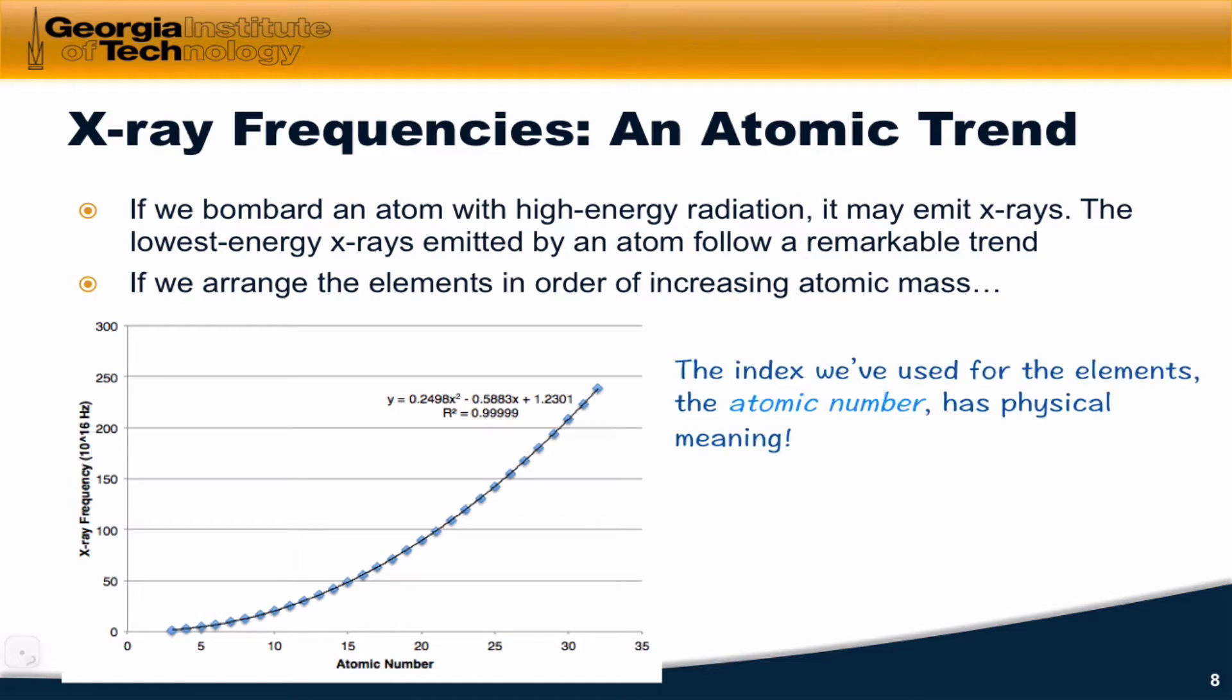What this tells us is that this index that we've used, the so-called atomic number, probably has some kind of physical meaning since we can correlate it with a physical property, this X-ray frequency. As you probably already know, atomic number defines an atom as a particular element and counts the number of protons in the nucleus.